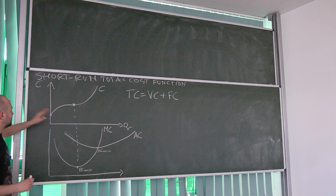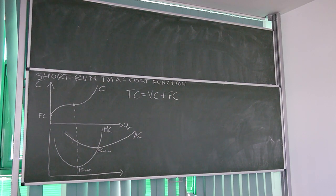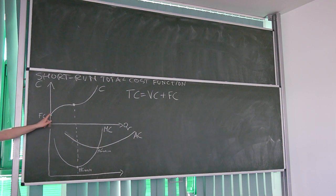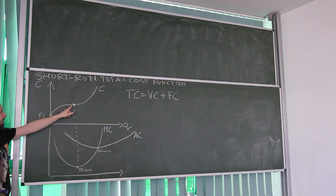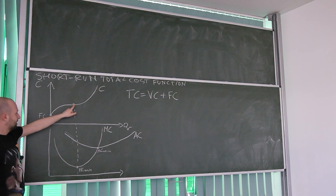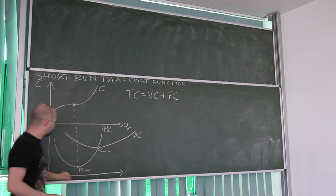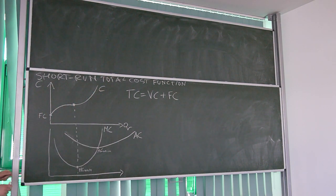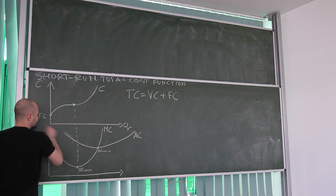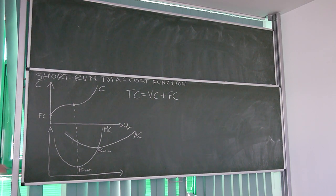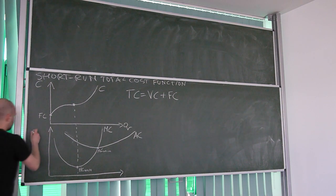Due to the law of diminishing returns, we know that at the beginning cost is increasing less than proportionally, and then it increases more than proportionally. Now we can show exactly the same in terms of marginal cost.